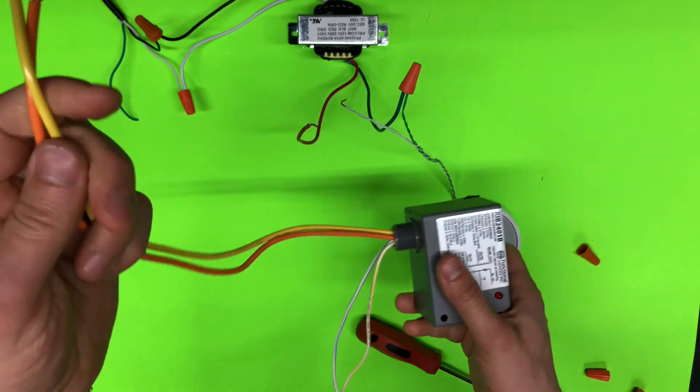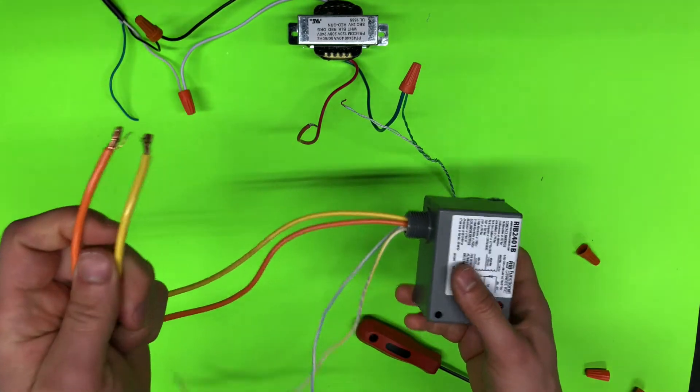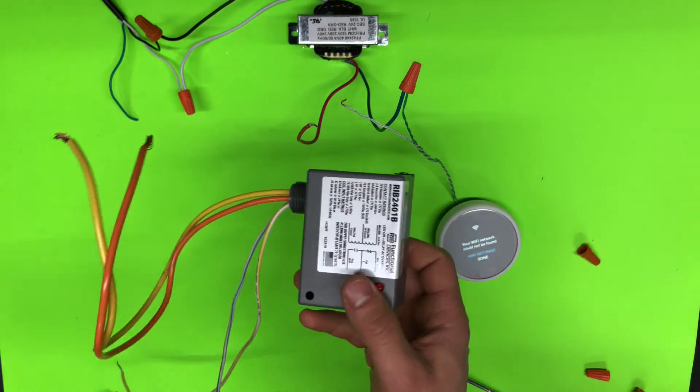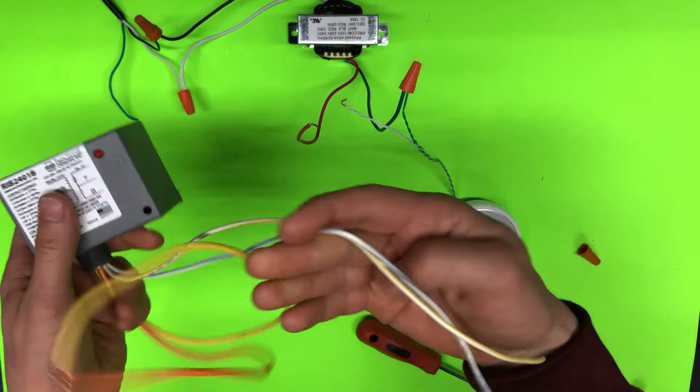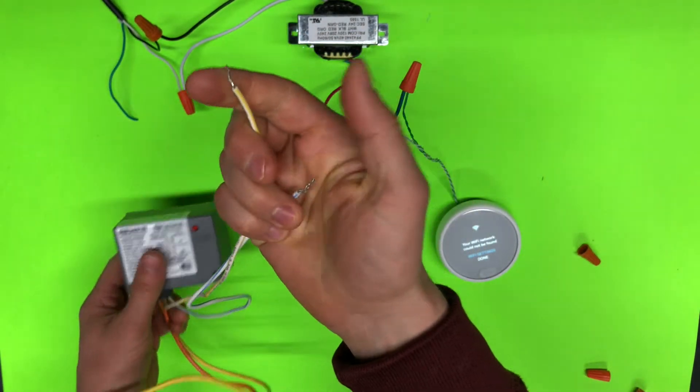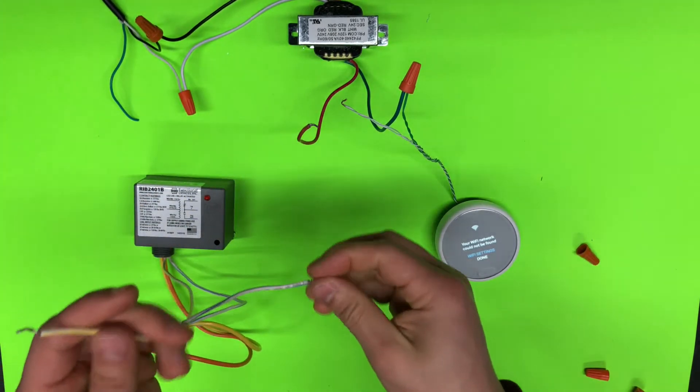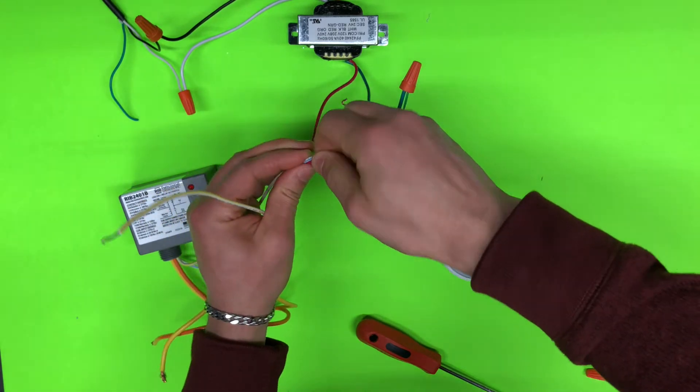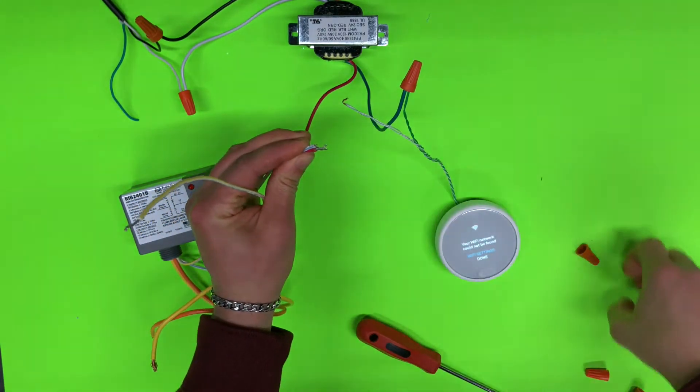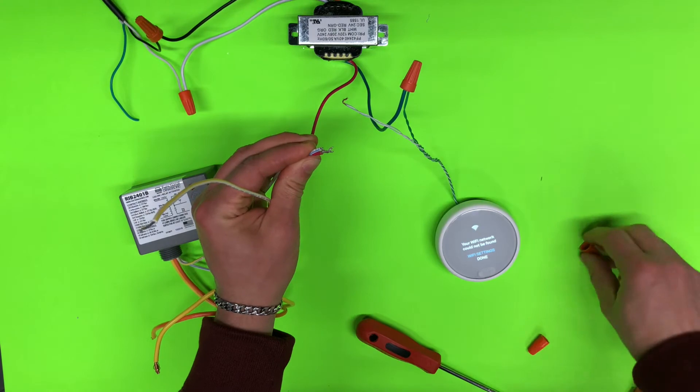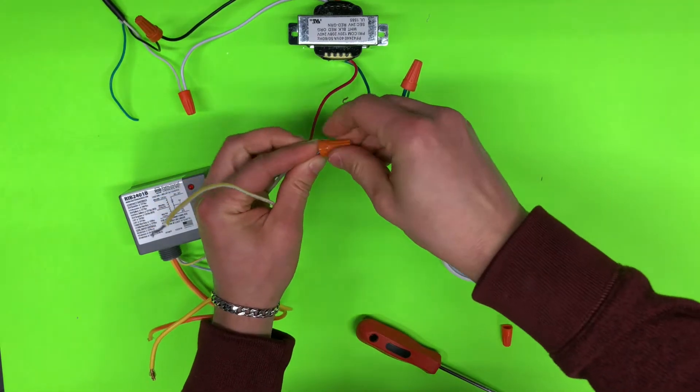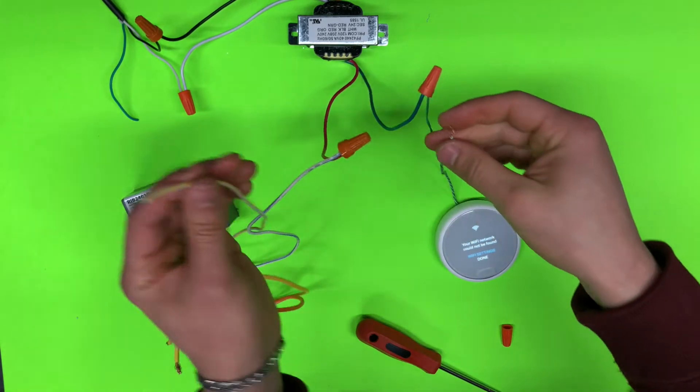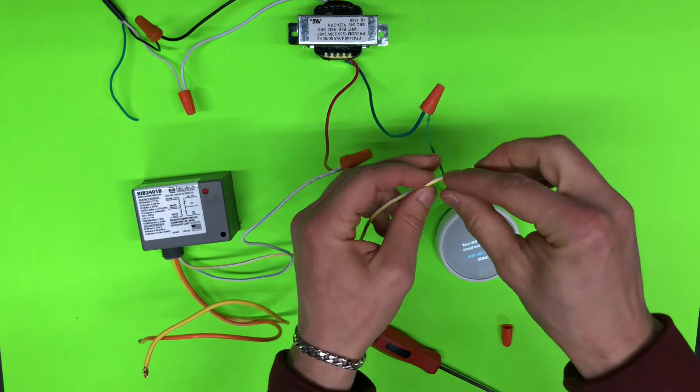Now we'll take our relay. We have two thick wires for high load, it can handle 20 amps, this is what we need for baseboards or for boilers. And this is the lower side, so we see thinner wires. So one wire we're connecting with our transformer, and second wire we're connecting with our thermostat.